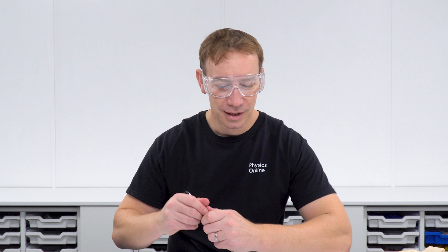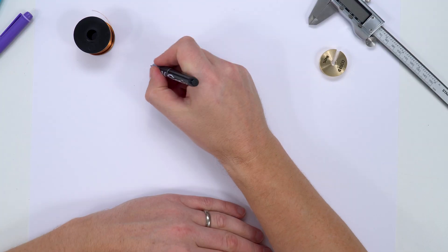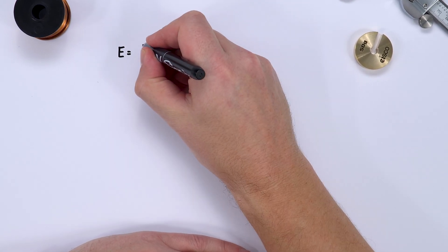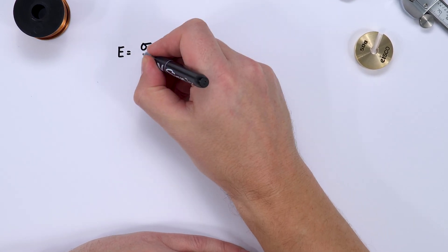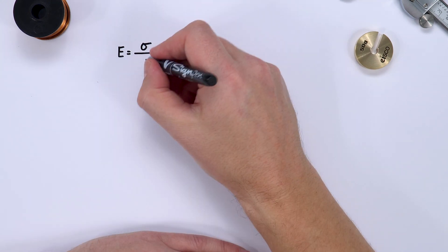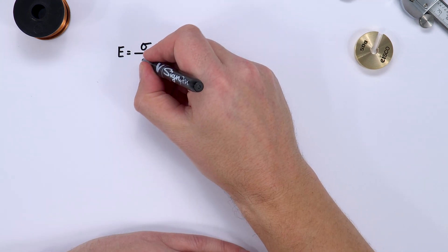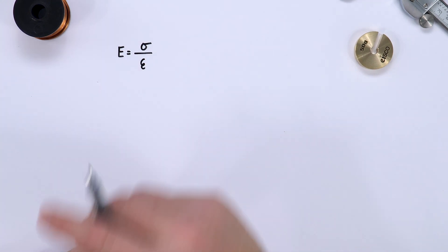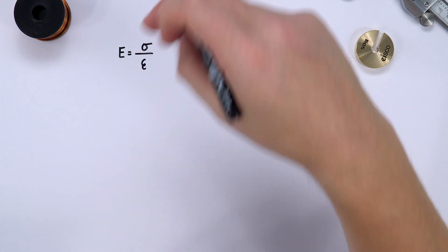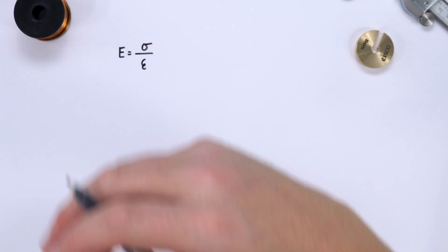The Young Modulus is equal to the ratio of the tensile stress divided by the tensile strain. In physics we use E to represent the Young Modulus, sigma to represent stress, and epsilon to represent strain. Sometimes exam boards just write this out as stress divided by strain.